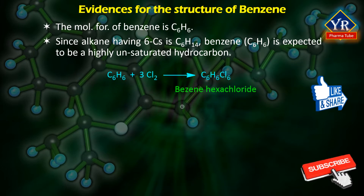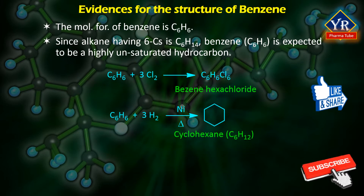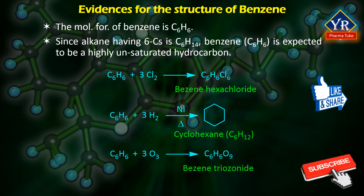This is revealed by reactions such as: when benzene is added to 3 molecules of chlorine in the presence of light, it forms benzene hexachloride, where 6 chlorine atoms are added to the 6 carbon atoms at the double bonds. Benzene on addition of hydrogen in the presence of a nickel catalyst produces the fully saturated compound cyclohexane, as the double bonds get fully saturated. On ozonolysis, benzene yields benzene triozonoid. All these reactions indicate that benzene contains three double bonds in its structure.